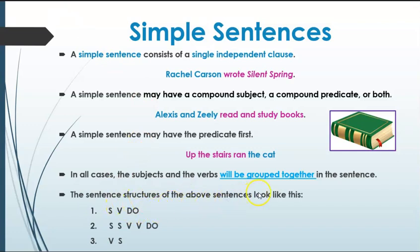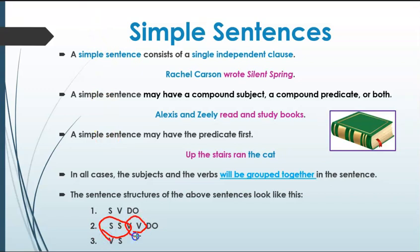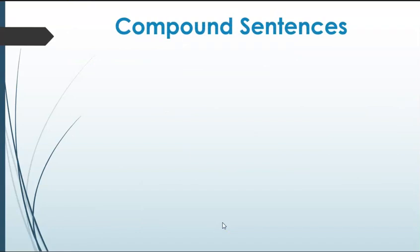The sentence structures above can be labeled like this: SVDO for 'Rachel Carson wrote Silent Spring'; SSVVDO for 'Alexis and Zeely read and study books,' with 'books' as the direct object; and VSDO for 'Up the stairs ran the cat.' In each case, all the S's and all the V's are grouped together — S's on one side, V's on the other.